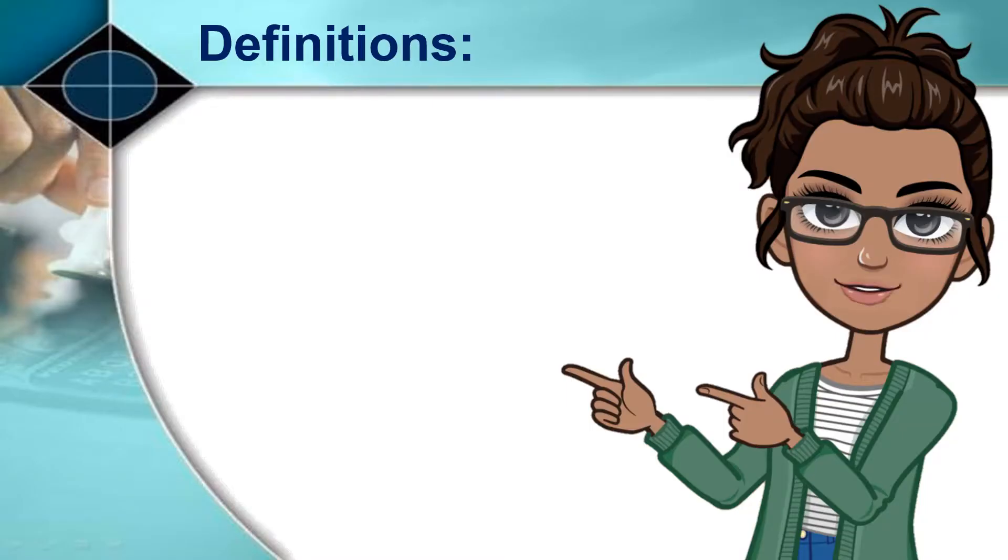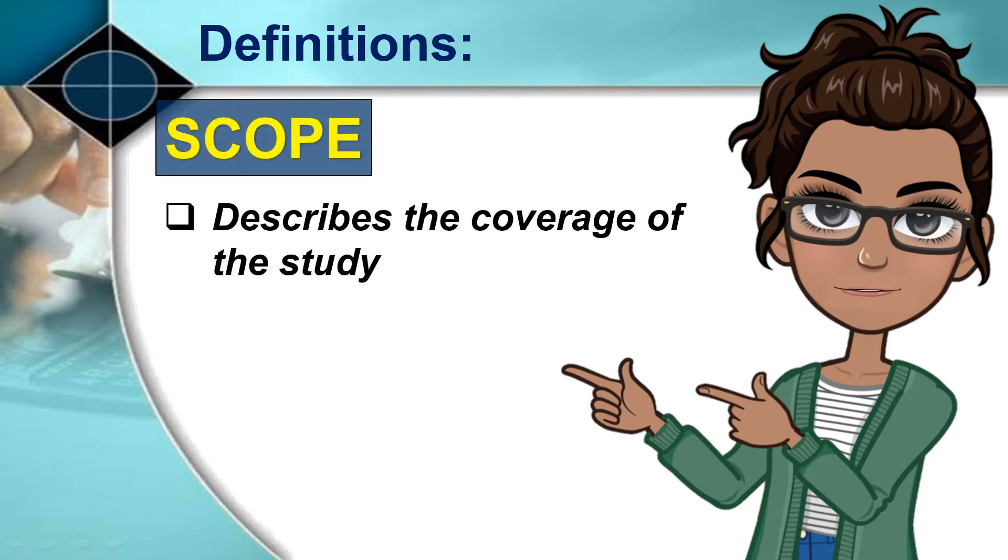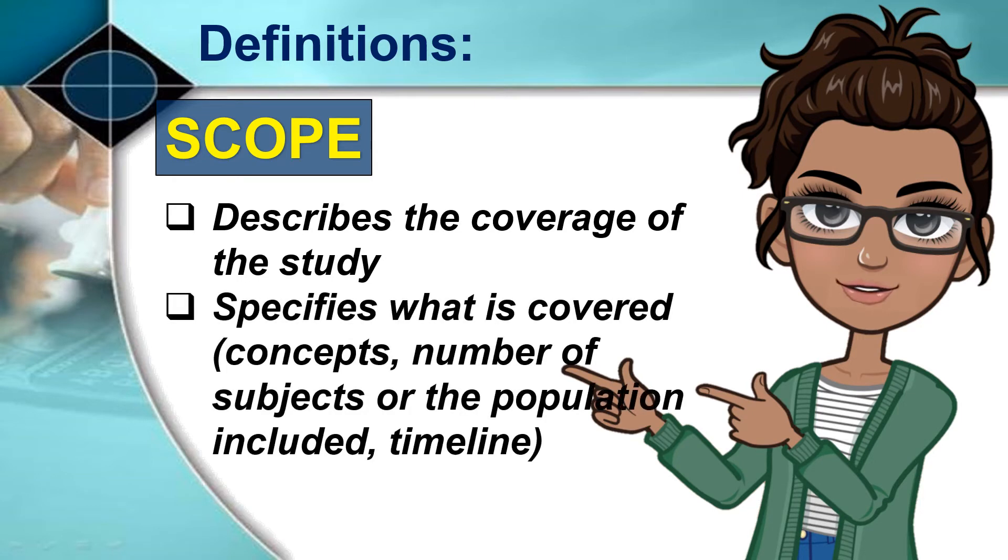Let's start with the definitions of scope and delimitation. The scope describes the coverage of the study. It specifies what is covered in terms of concept, number of subjects, or the population included in the study, as well as the timeline when the study was conducted.